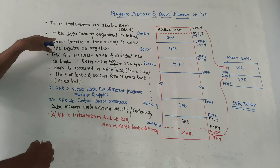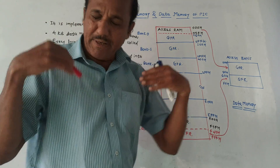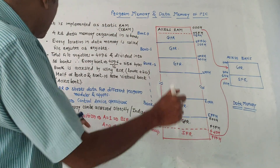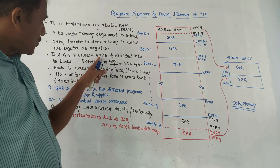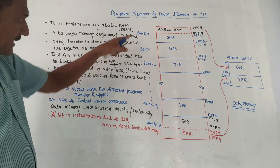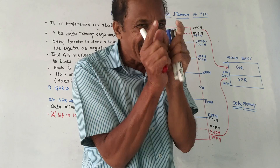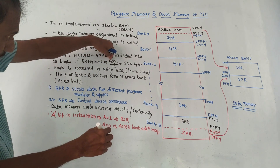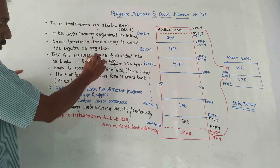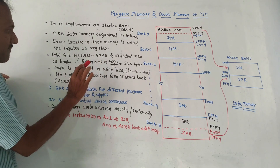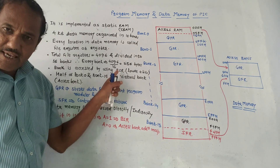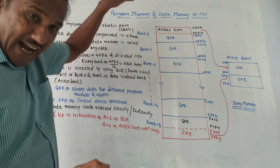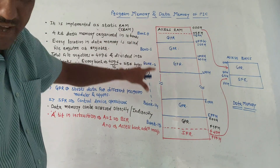Every location in the data memory is called a file register, or simply a register — a device used to store data or an address. There are 4096 file registers divided into 16 banks. Each bank therefore contains 256 bytes (4096 divided by 16). A bank is accessed using BSR — Bank Select Register — and at any one time only one bank will be active.